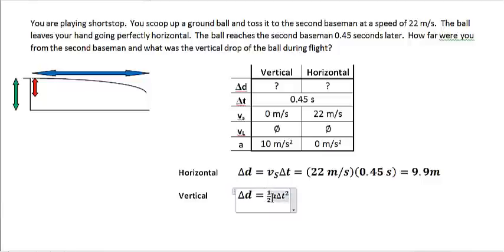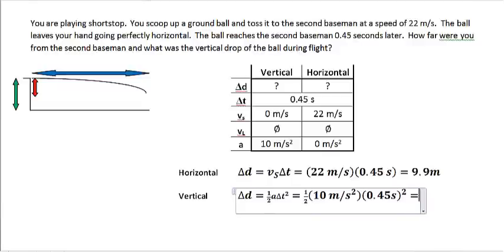I love it when that happens. In our numbers, we get... And that's what it looks like. And when I do that on my calculator, square 0.45 seconds times 10 times 1/2 is 1.0125 meters.